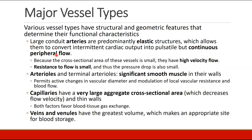Capillaries are the tiniest vessels. Even though they are only one cell thick — one cell in diameter — there are so many of them that as an aggregate they have a very large cross-sectional area. As a result, flow is very slow through the capillaries. They also have thin walls, which allows gas exchange across the wall into tissues.